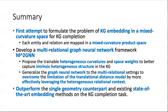We developed a multi-relational graph neural network framework, M²GNN. We propose trainable heterogeneous curvatures and space weights to better capture the intrinsic heterogeneous structure in KG. It generalizes the graph neural networks to multi-relational settings to overcome the limitation of the translational distance model by more effectively leveraging the heterogeneous relational context. And it also outperforms the single geometry counterpart and existing state-of-the-art embedding methods on the standard KG completion tasks.